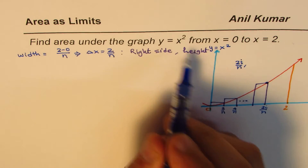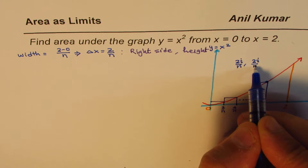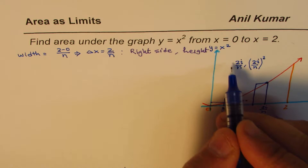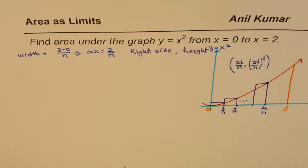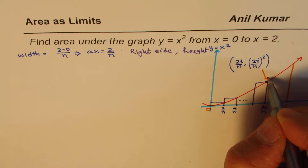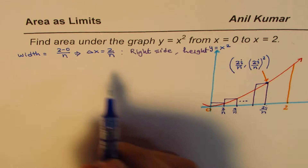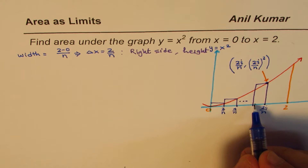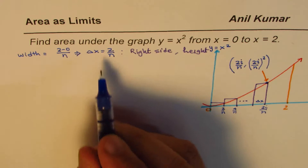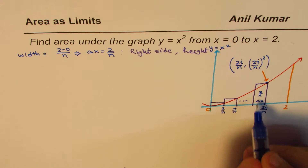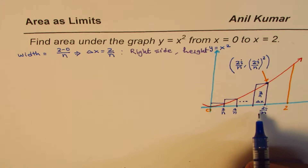The coordinate point for the ith rectangle is (2i/n, (2i/n)²), since we are using y = x². That is the general coordinate. The width delta x equals 2/n.